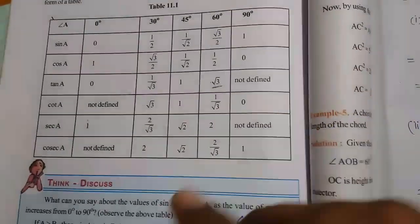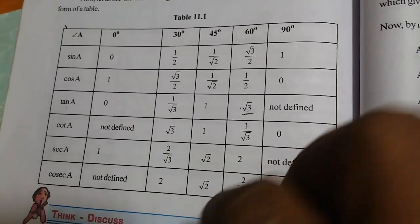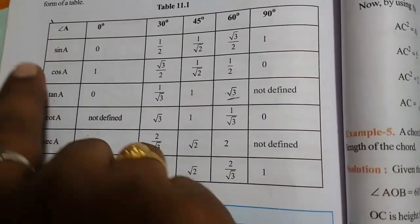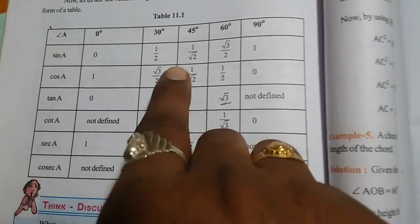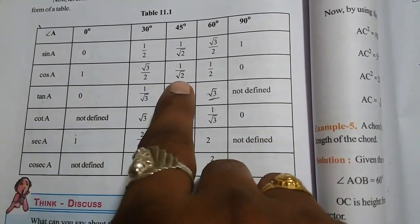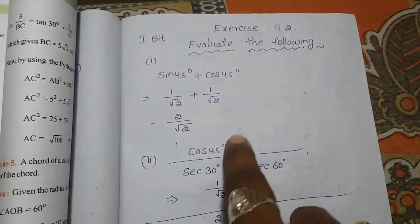Here is the table. Before solving the problems of exercise number 2, everyone has to be thorough with this table. Memorize this table. Here sin 45° is nothing but 1 by root 2 and again cos 45° is 1 by root 2. Substitute these 2 values in our question and you will get the answer.